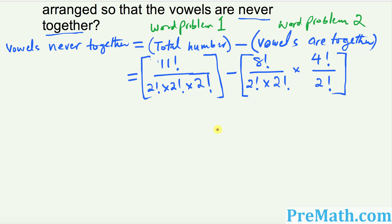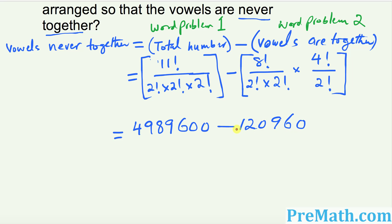We already found the answer to word problem number 1, which was 4,989,600, and then minus the portion from word problem 2, which was 120,960. We subtract and we get 4,868,640. That is your answer.